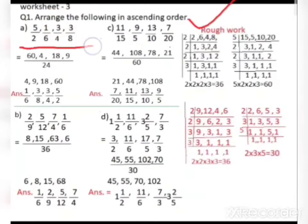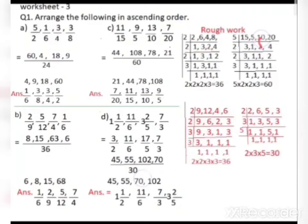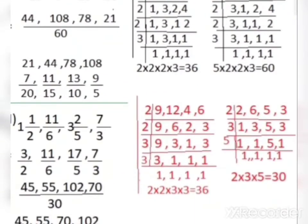We are taking the LCM of 2, 6, 4, and 8. In LCM, we divide by prime numbers. We will start with 2. Most terms are divisible by 2: 2×1=2, 2×3=6, 2×2=4, 2×4=8. Let me zoom in so you can see clearly.